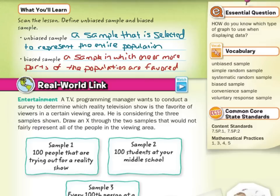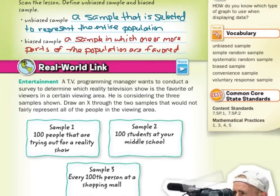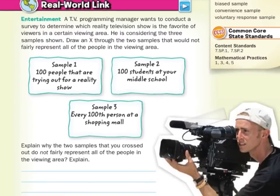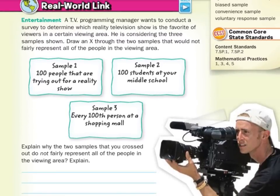We will get into the meanings of those definitions and their applications. In our real-world link, a TV programming manager wants to conduct a survey to determine which reality television show is the favorite of viewers in a certain viewing area. He is considering three samples shown. Draw an X through the two samples that would not fairly represent all of the people in the viewing area.